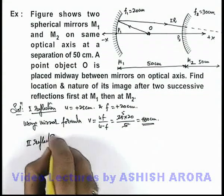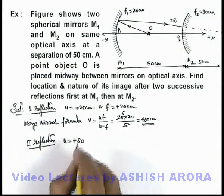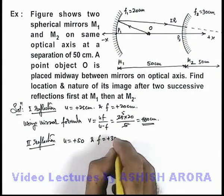So here for second reflection we can consider u to be equal to plus 50, and the focal length of this mirror we can take as plus 30 centimeters.